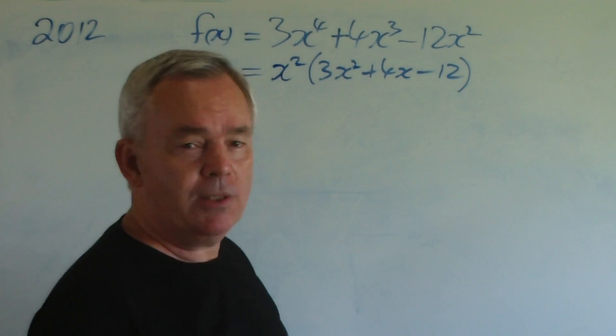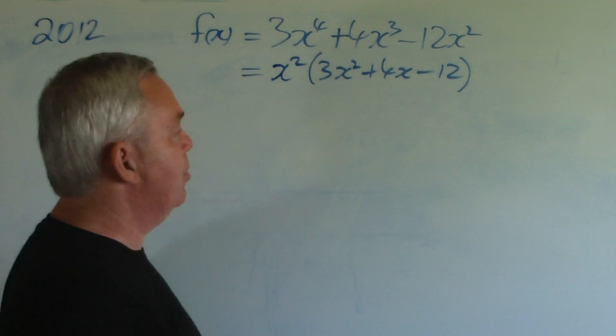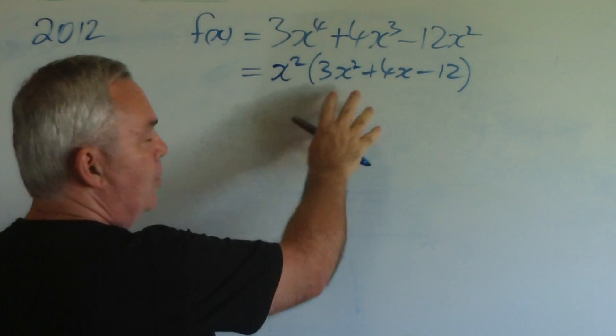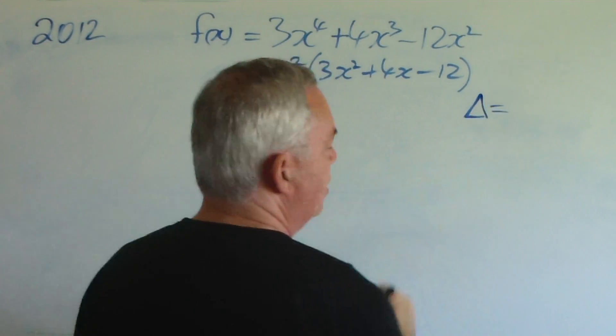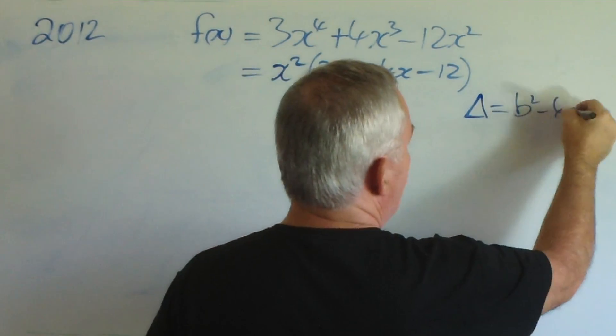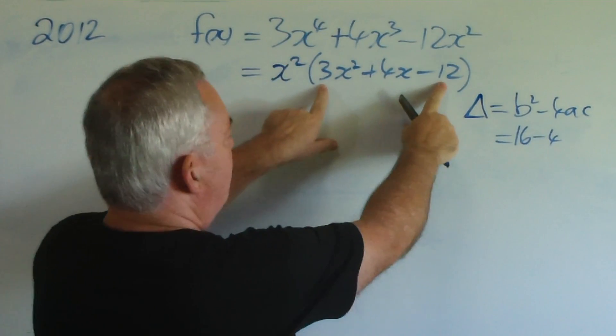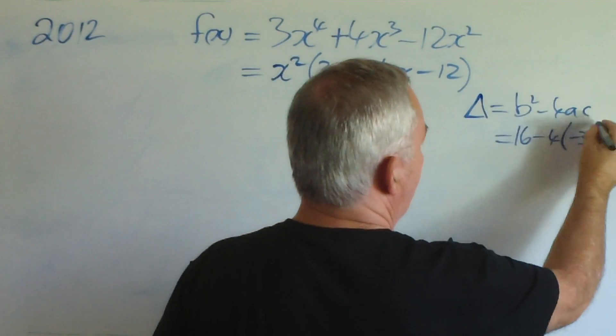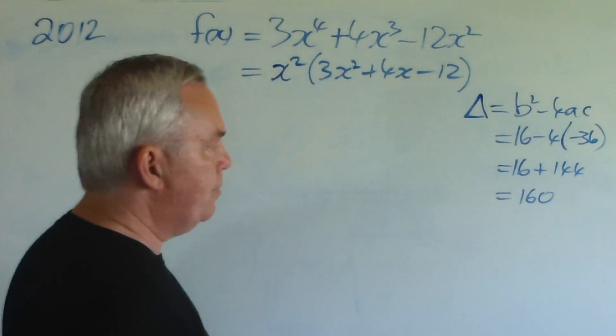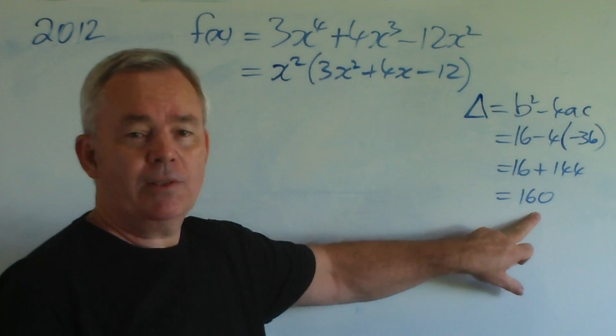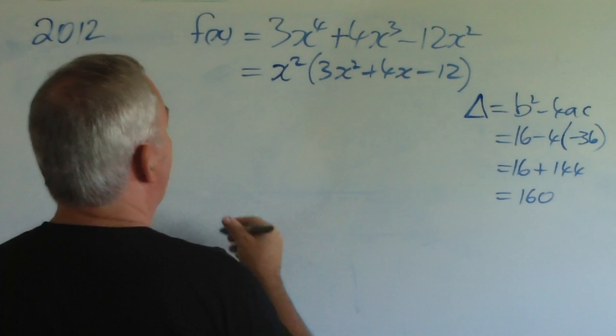We could attempt to factorise it. There are a variety of methods, and I will be showing some videos on how to factorise quadratic equations. But, for the moment, we'll just run a quick test. Off on the side of our page, we'll work out the discriminant, which is b² - 4ac. b squared is 16. a times c is minus 36. So, that's 16 plus 144 equals 160. That is positive. So, we're going to have two distinct real roots, but, unfortunately, they're not pretty ones.